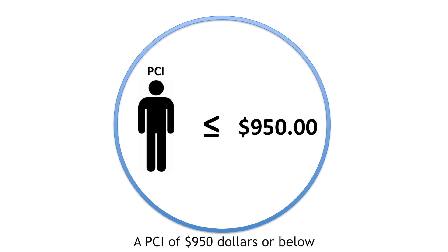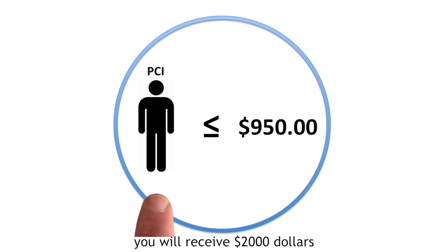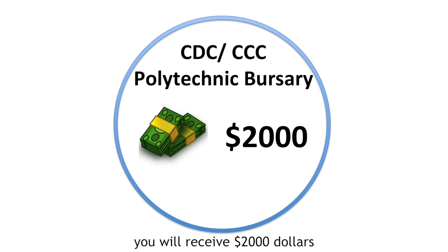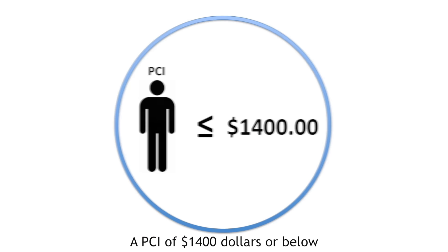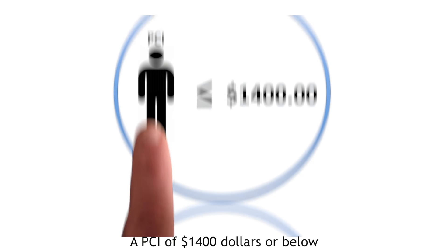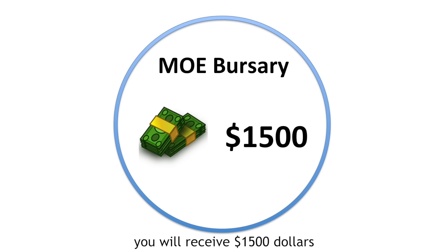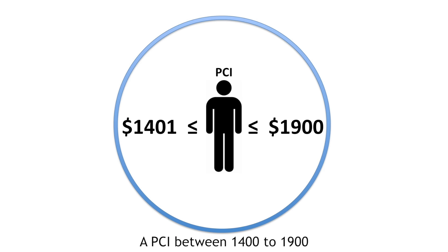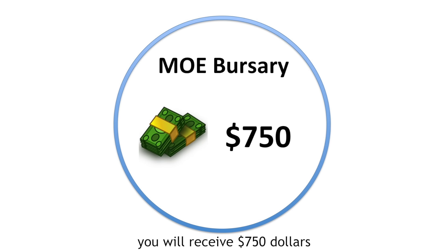A PCI of $950 or below, you will receive $2,000. A PCI of $1,400 or below, you will receive $1,500. A PCI of $1,400 to $1,900, you will receive $750.